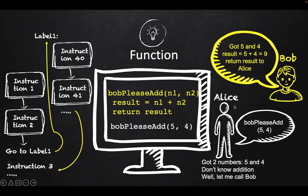And Bob is another set of instructions in the program who is doing some other task, and some part of the work Alice is offloading to Bob. In the next module, we will learn about functions with some more detail with hands-on examples in Python.